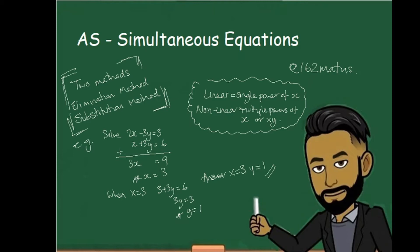There are two methods of solving simultaneous equations. One is the elimination method, as shown on the board with 2x minus 3y equals 3 and x plus 3y equals 6. With the elimination method you try to get one variable the same in each equation and then eliminate them by adding or subtracting the two equations.